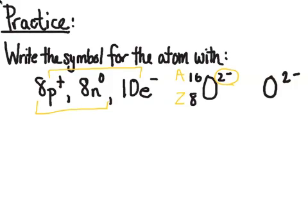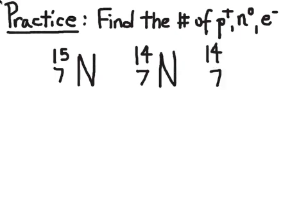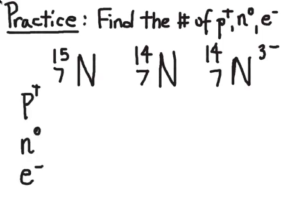Now let's do some more dissection like I did in the first slide. Let's take a look at some different forms of the element nitrogen. Let's find the number of protons, neutrons, and electrons, and then do some compare and contrast for these species. So let's look at nitrogen-15, nitrogen-14, and a nitrogen ion that has a charge of minus 3. Go ahead and look at these, determining the number of protons, neutrons, and electrons for each of these three.